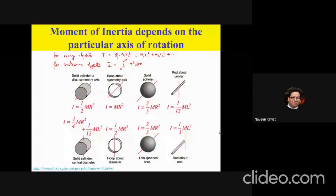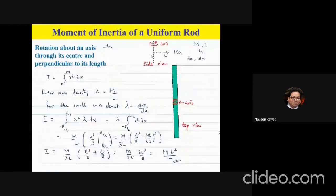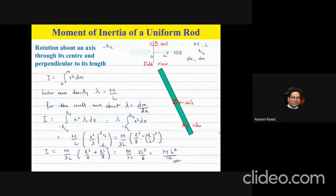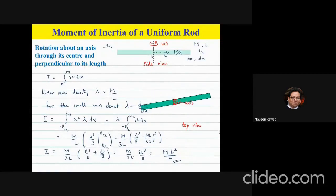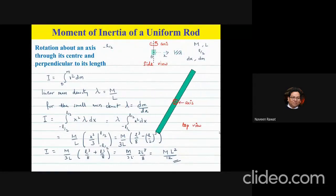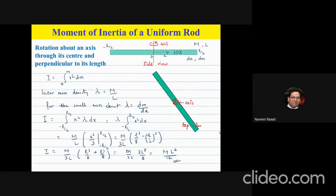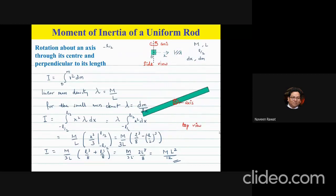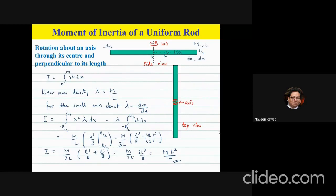In the last lecture, we talked about how to calculate the moment of inertia for continuous objects. The first case we did was a rod rotating about the center axis through the center of mass, and it's a uniform rod, meaning it has the same density throughout.